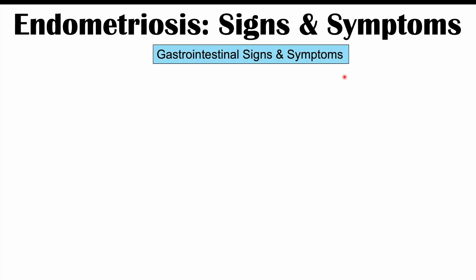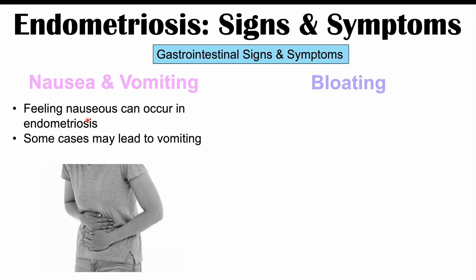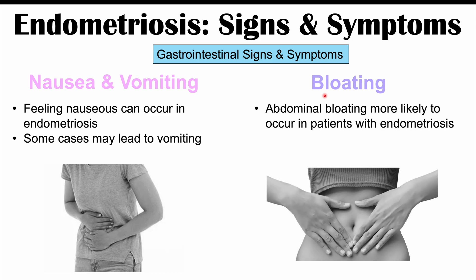There are also gastrointestinal signs and symptoms that can occur in endometriosis. These can include nausea and vomiting — feeling nauseous can occur in some patients, and in some cases it may lead to vomiting. Bloating is also more likely to occur in patients with endometriosis.